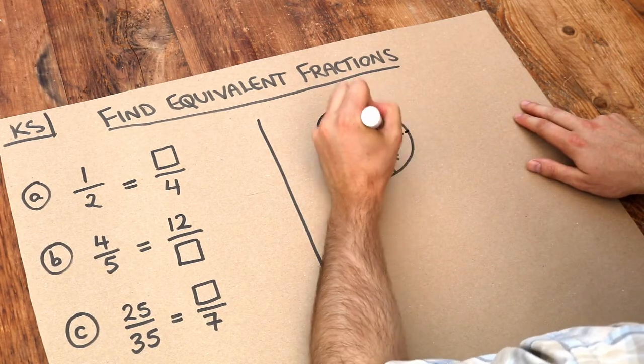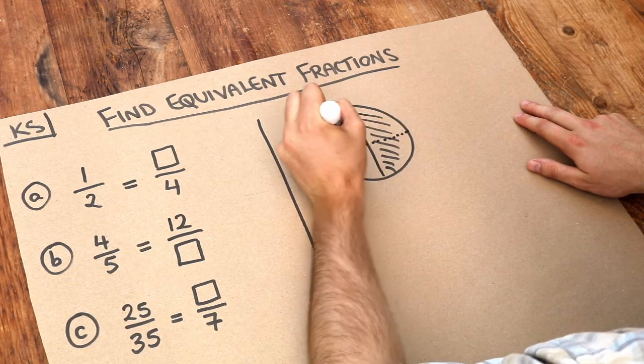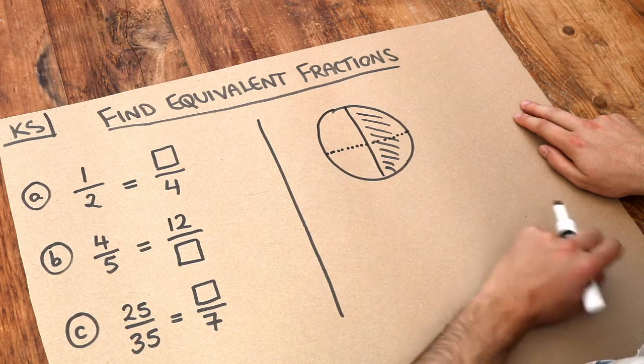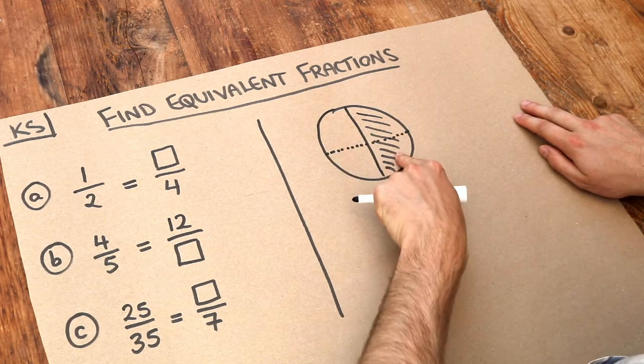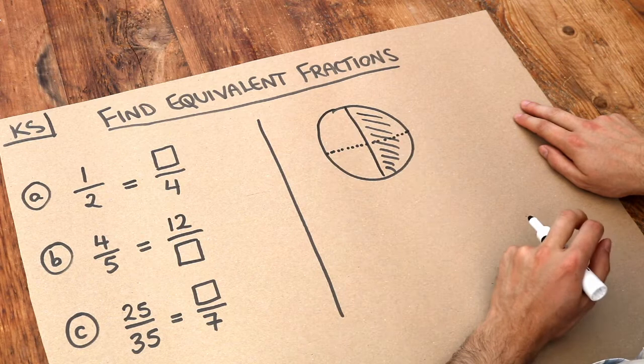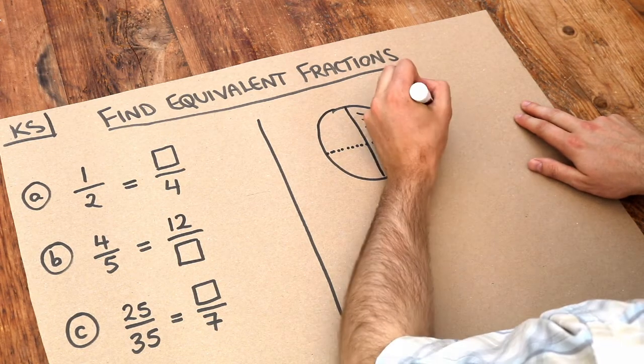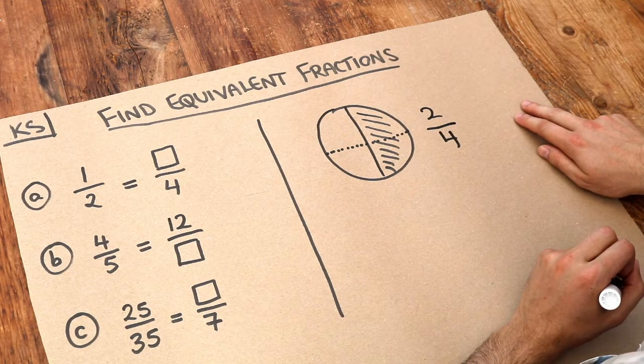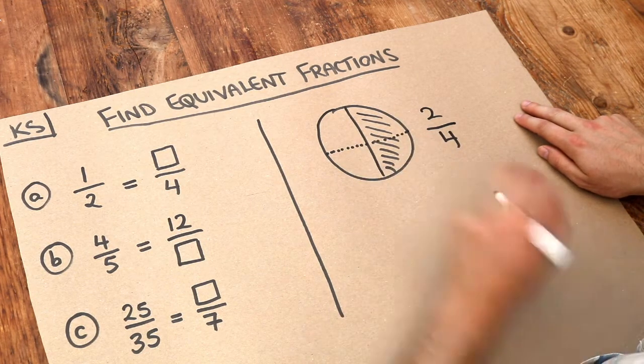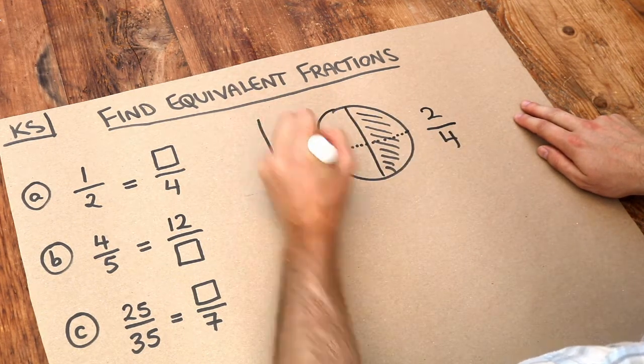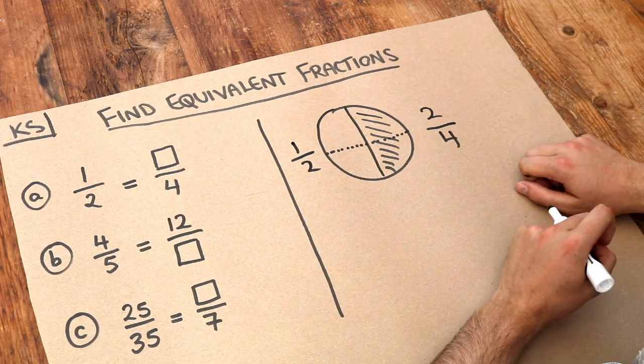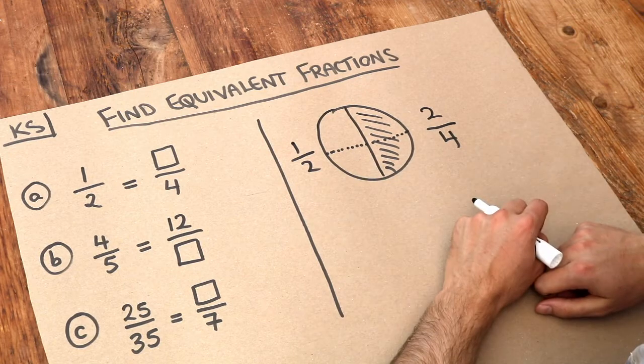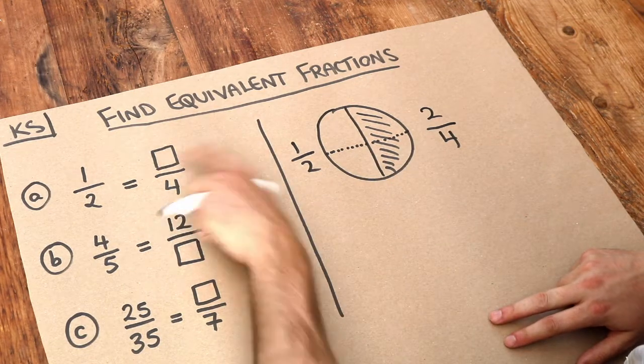If I was to split it like this, my pizza is now split into four pieces. How many of those pieces do I have? Well I have two out of the four pieces of pizza, so we could write this fraction as two out of four. But it's the same amount of pizza, so that half a pizza we originally had is the same as two quarters of a pizza. These two fractions are therefore equal, so we can see the answer here is two.